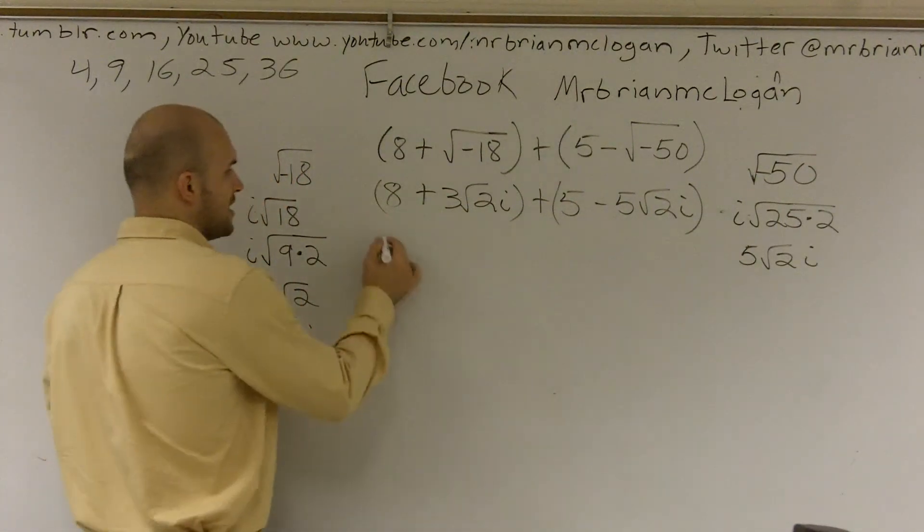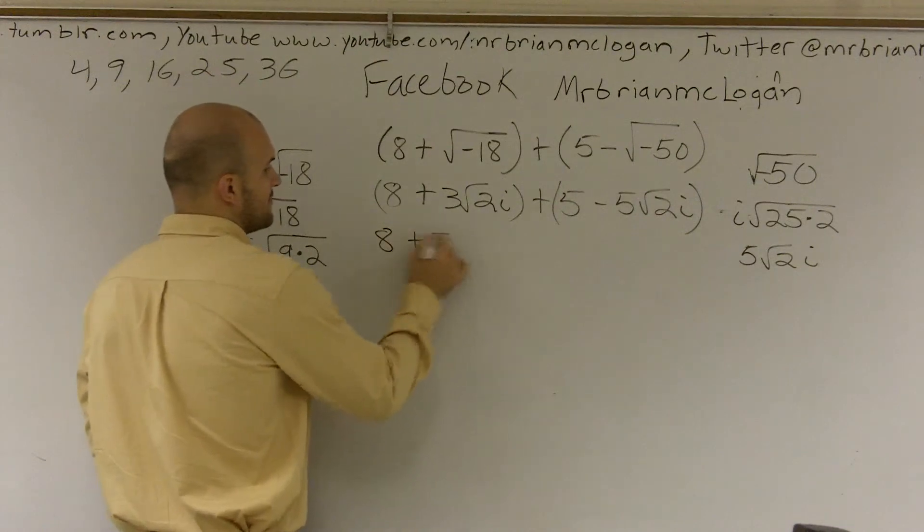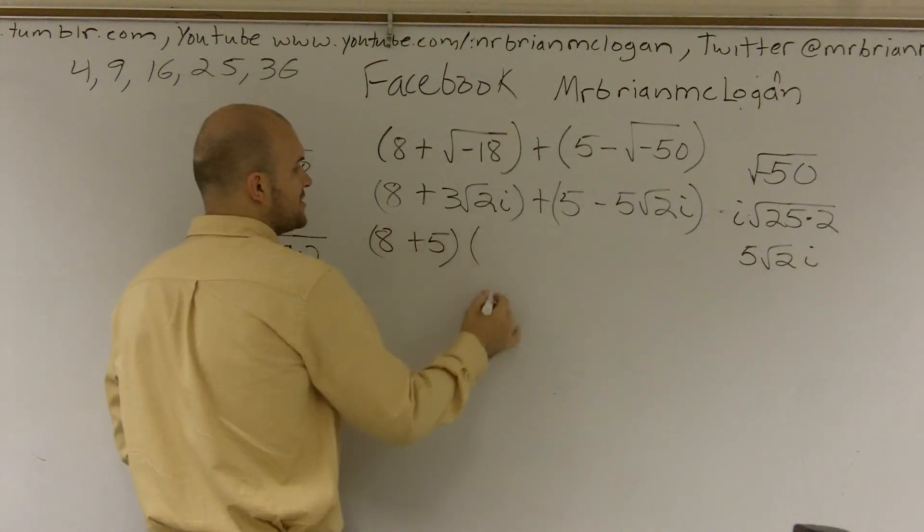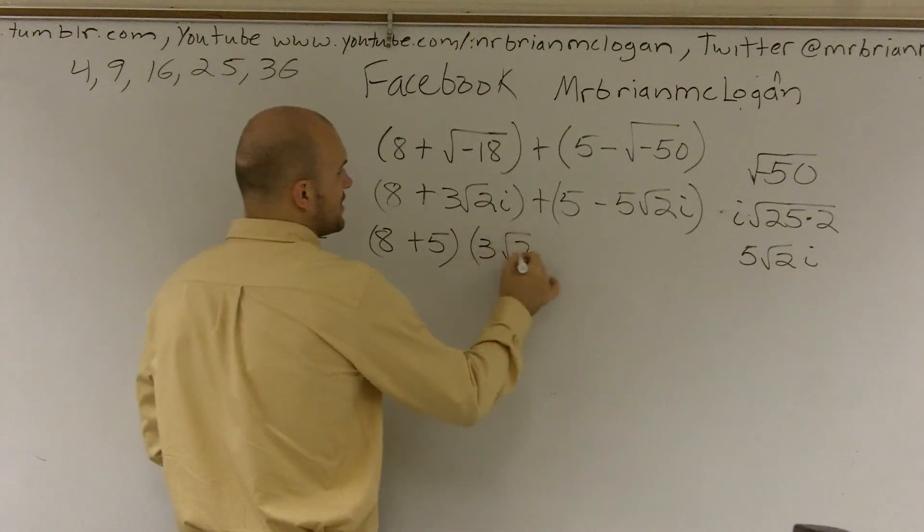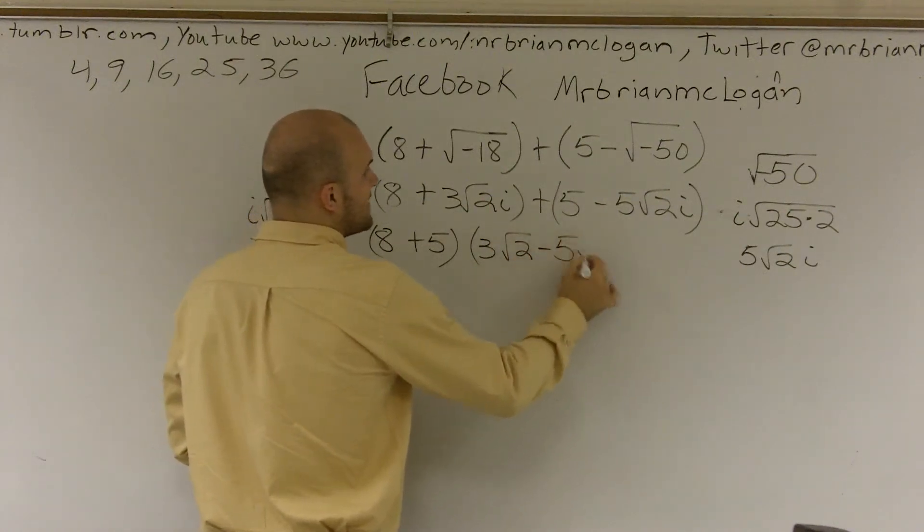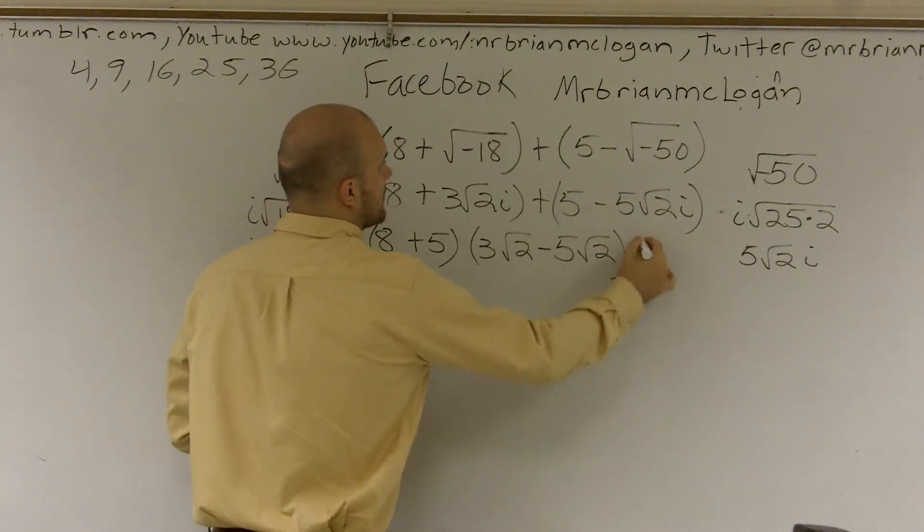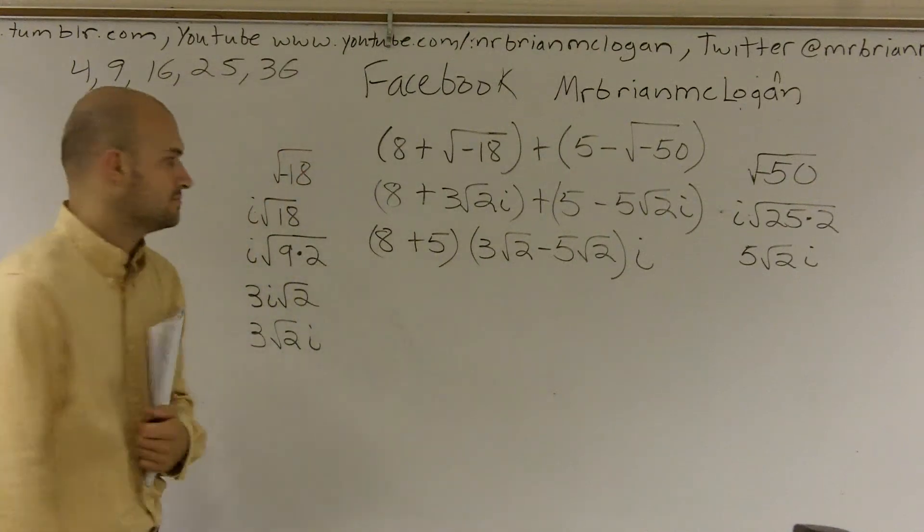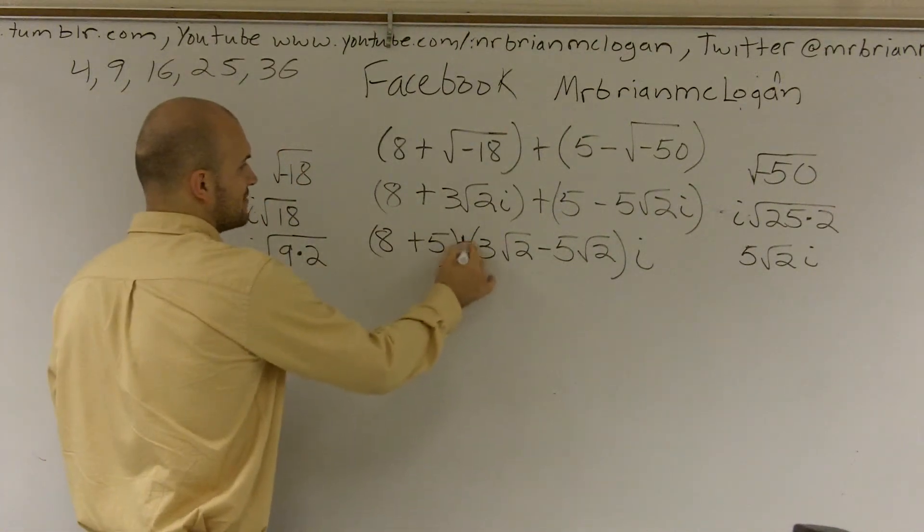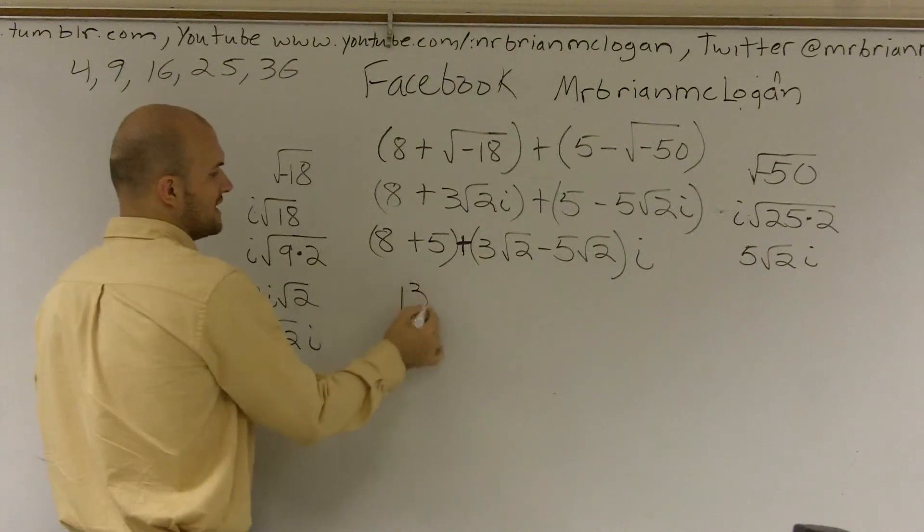Then you just add your real parts, which you have 8 + 5. And then you add your imaginary parts. It would be 3√2 - 5√2i. And there's a big plus on there. 8 + 5 is 13.